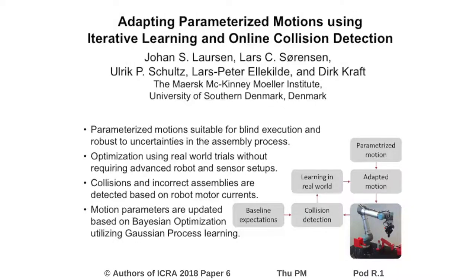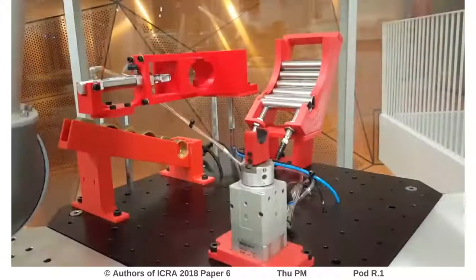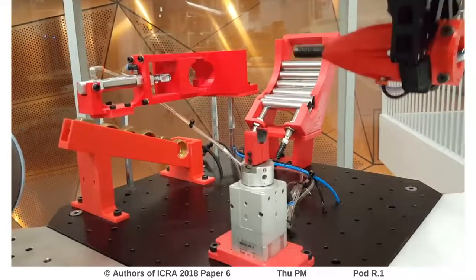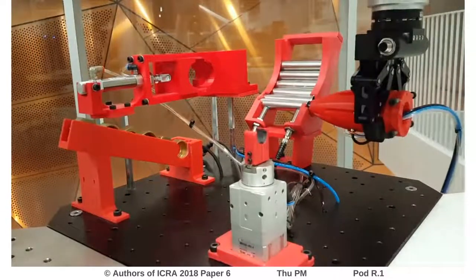This is the accompanying video for the paper adapting parameterized motions using iterative learning and online collision detection. In this paper we work towards techniques for increasing robustness and dependability of industrial robot setups targeted assembly and manufacturing.